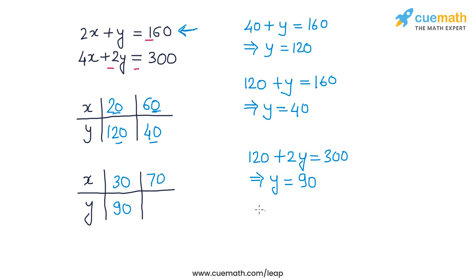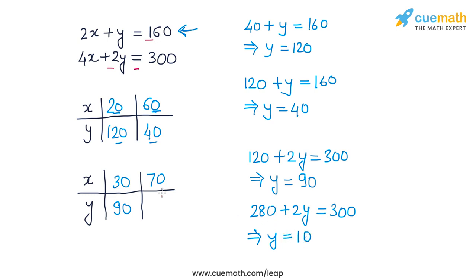Now taking x = 70: substituting, 4x = 280, so 280 + 2y = 300, giving y = 10. So corresponding to x = 70, y = 10. Two solutions for the second equation are (30, 90) and (70, 10).